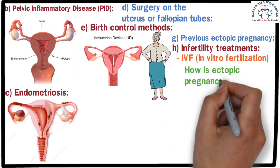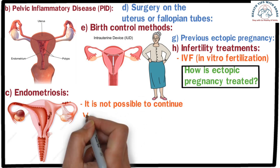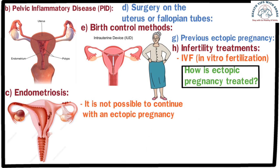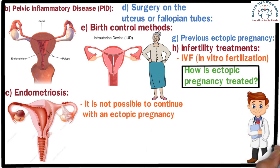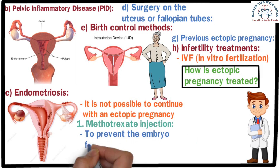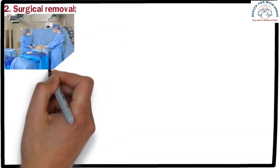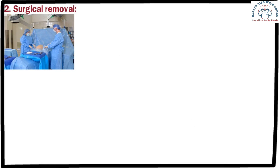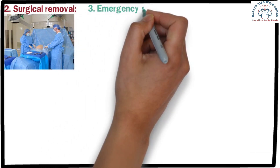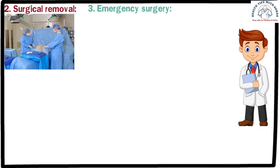How is ectopic pregnancy treated? Unfortunately, it is not possible to continue with an ectopic pregnancy — a miscarriage needs to be induced as soon as possible. After confirming ectopic pregnancy through ultrasound, the doctor will decide on treatment based on the location of the embryo. 1. Methotrexate injection — to prevent the embryo from growing further, preventing the risk of fallopian tube rupture. 2. Surgical removal — surgery to remove the embryo; depending on the situation, the fallopian tube may need to be removed as well. 3. Emergency surgery — if the ectopic pregnancy has already ruptured, immediate surgery is required. It is important to consult your doctor, who will make the best decision based on your condition and explain the benefits and risks of each treatment option.